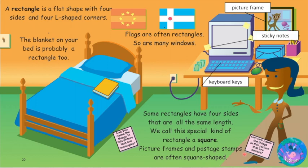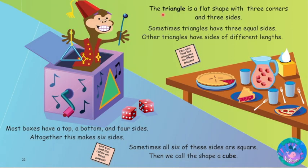The triangle is a flat shape with three corners and three sides. Sometimes triangles have three equal sides; other triangles have sides of different lengths. Can you find the triangles on this page?